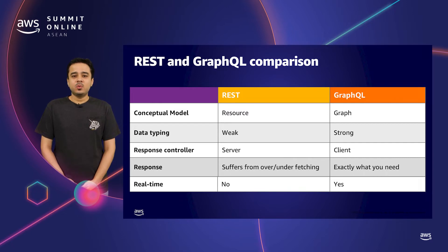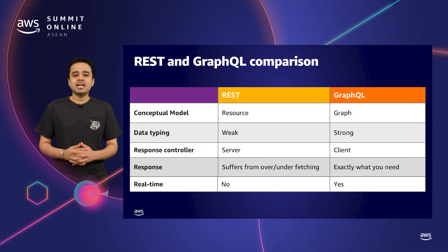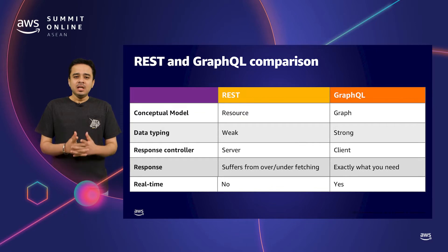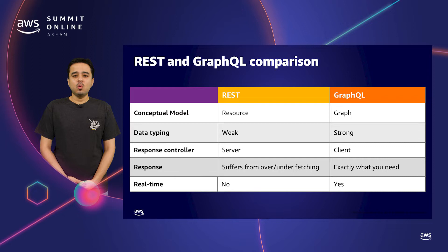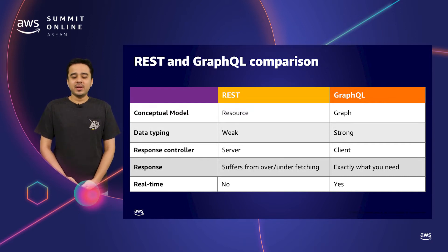REST does not adhere to a strongly typed schema, while GraphQL, at its core, works around a strongly typed model, giving you benefits such as automatic validation and introspection. The most prominent fundamental difference: in REST, the server controls the response sent to the client, while in GraphQL, the client controls the response returned by the server by asking for specific fields. This leads to a major problem with REST — they suffer from over- or under-fetching, returning more or less data than required. GraphQL solves this by allowing the client to ask for exactly what it needs, and the server returns just that.